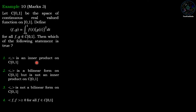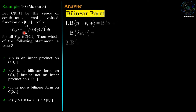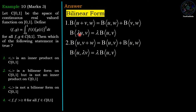So it is a problem of bilinear form and inner product. First we recall when this product becomes bilinear. This product becomes bilinear if it satisfies these four conditions. First condition: ⟨u+v, w⟩ = ⟨u,w⟩ + ⟨v,w⟩, and ⟨λu, v⟩ = λ⟨u,v⟩ — linearity in the first coordinate. Similarly, linearity in the second coordinate: ⟨u, v+w⟩ = ⟨u,v⟩ + ⟨u,w⟩, and ⟨u, λv⟩ = λ⟨u,v⟩. This product becomes bilinear if it satisfies these four conditions, meaning linearity in both coordinates.